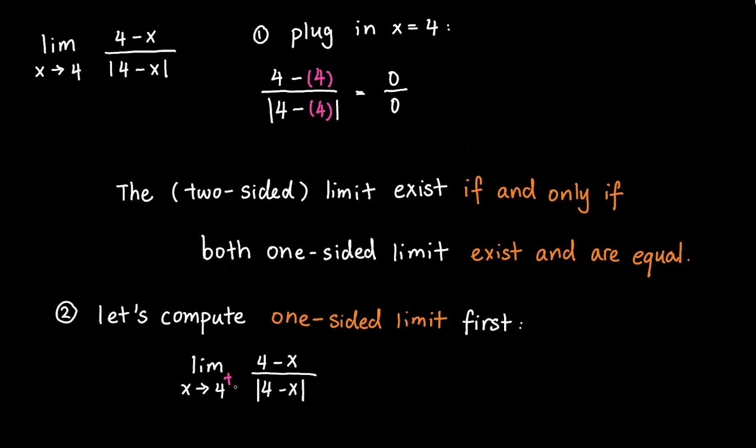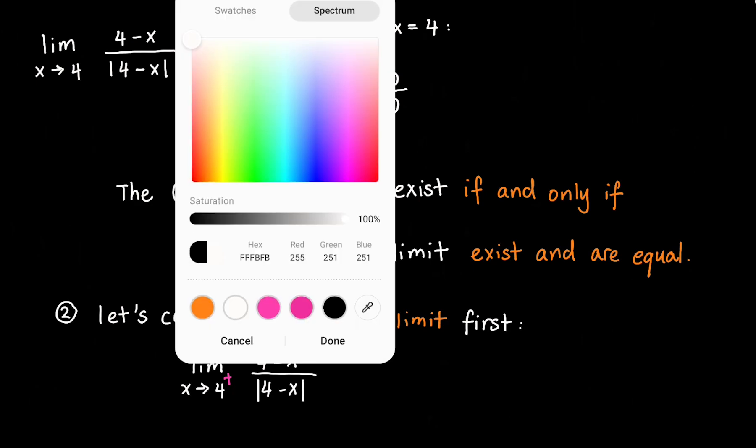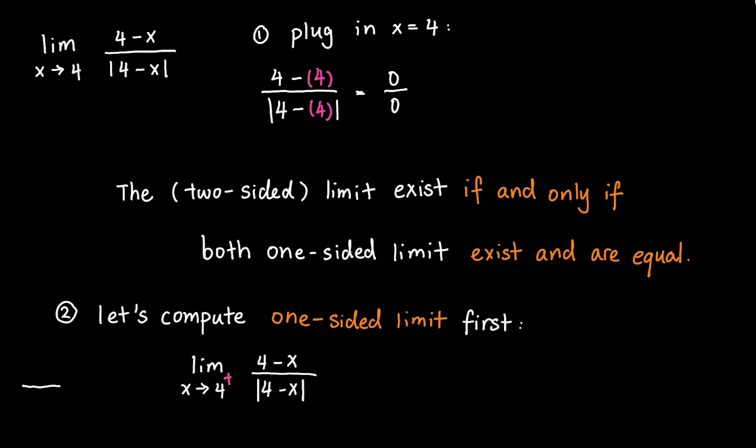Well here we have x approaches 4 from the positive side. This plus sign over here indicates we are approaching 4 from the right side. Let me draw an x-axis. So here we are seeing x approaches 4 from the right side. That means the x value is greater than 4.